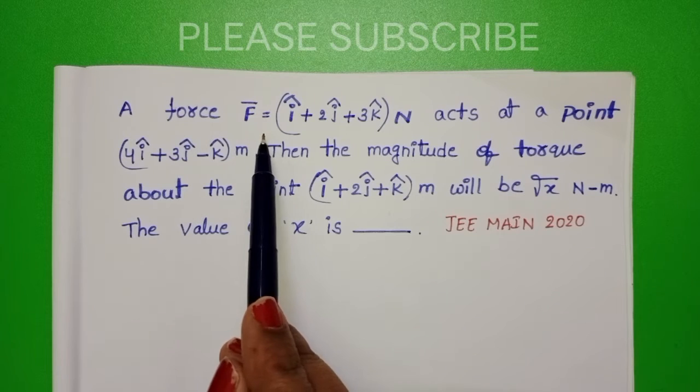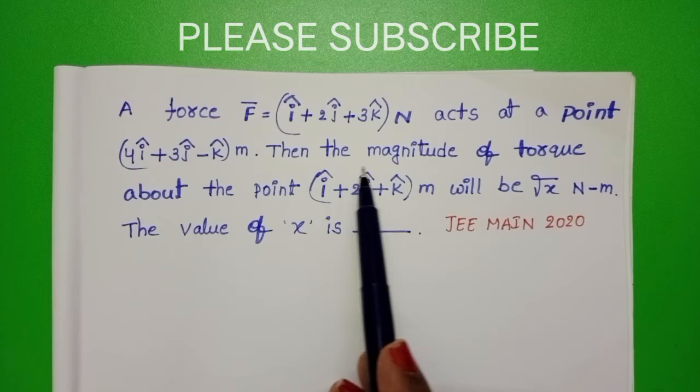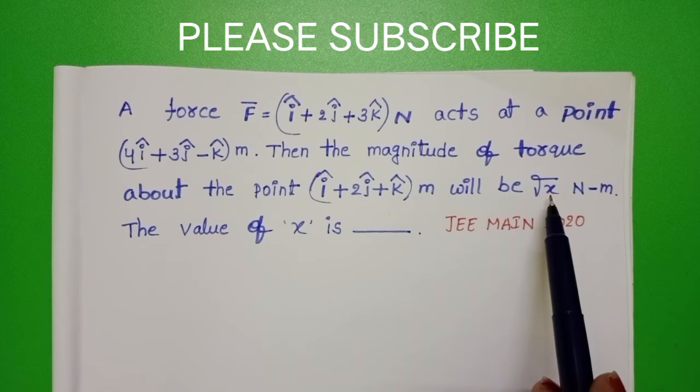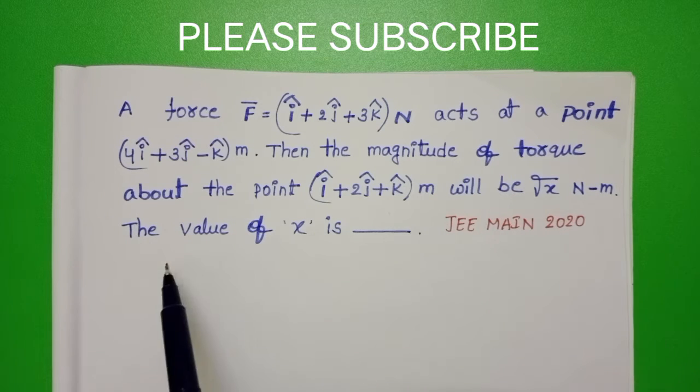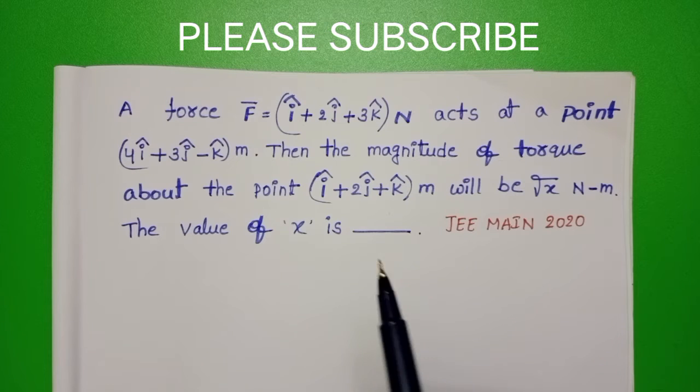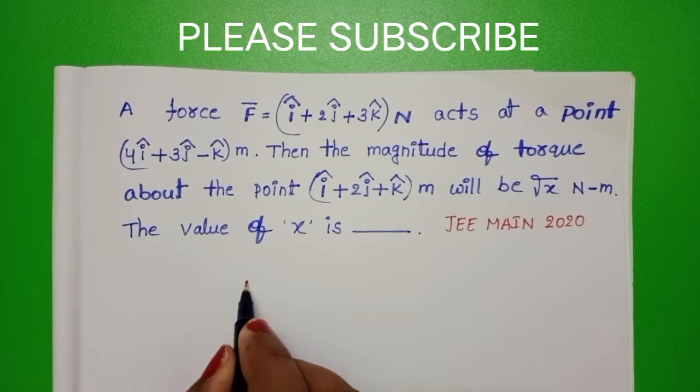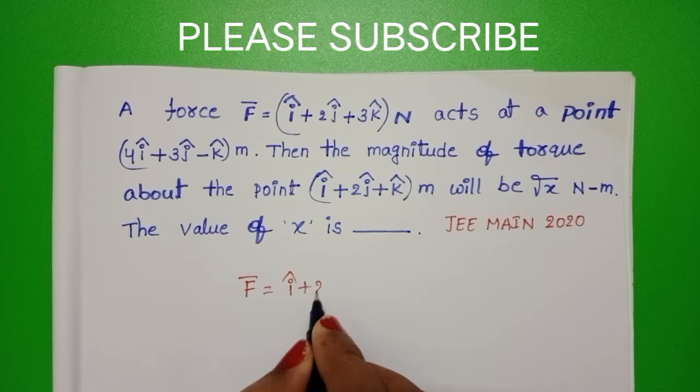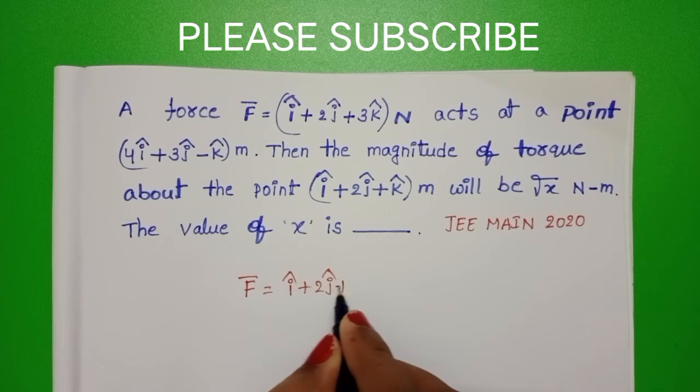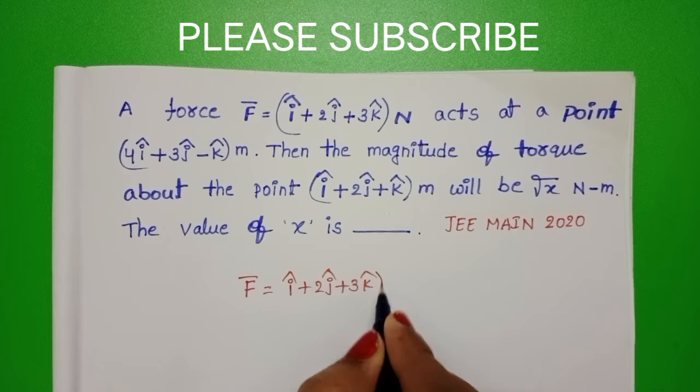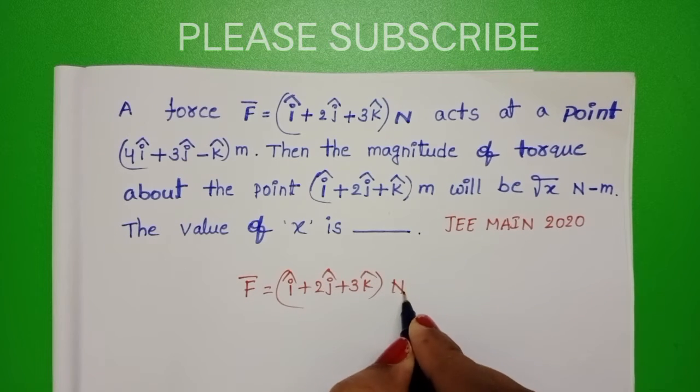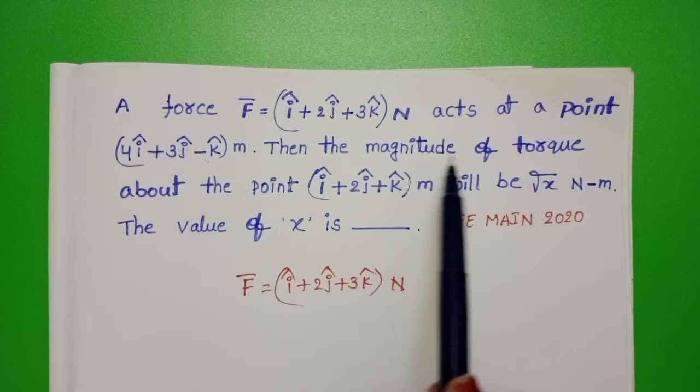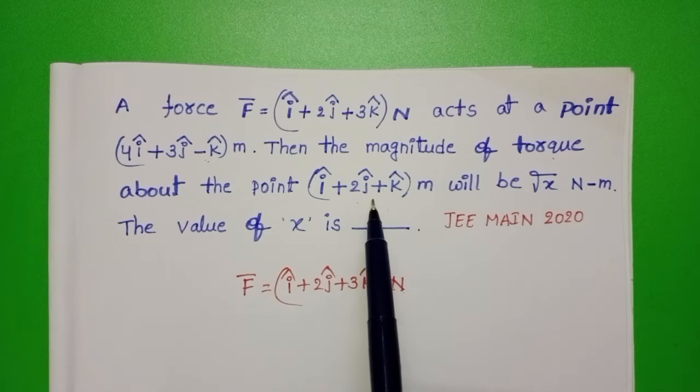A force F-bar acts at a point. Then the magnitude of torque about the point will be root x newton meter. The value of x is to be found. Given force F-bar equals i cap plus 2 j cap plus 3 k cap newton. This force acts at a point. We have to find out the magnitude of the torque at this point.